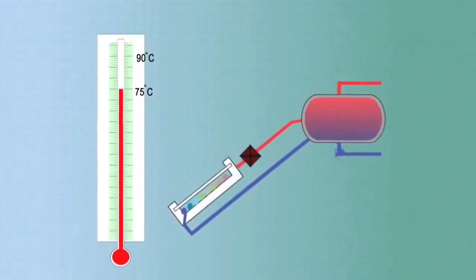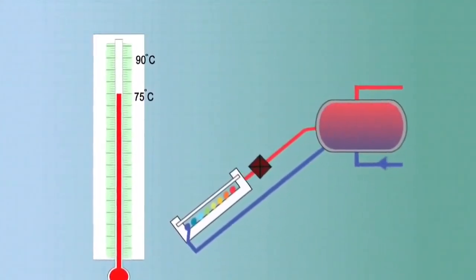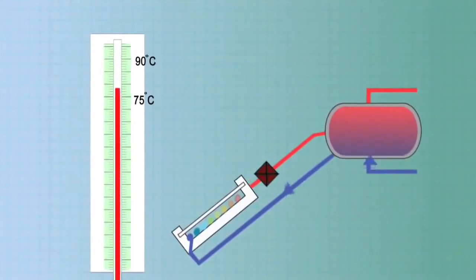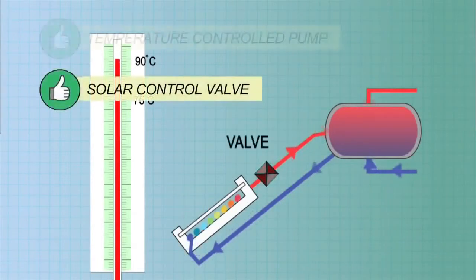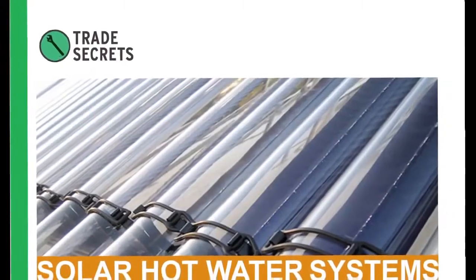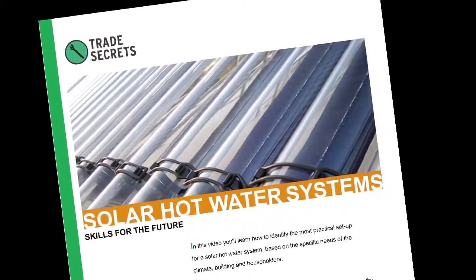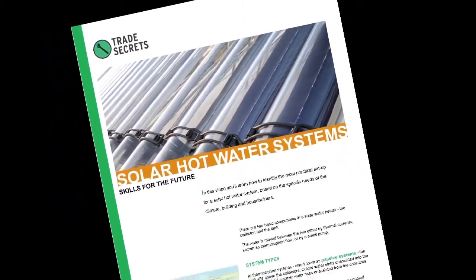The most common way to prevent overheating in the tank is by automatically stopping the circulation between collector and tank when the tank water gets too hot. This can be done using a solar control valve or a temperature-controlled pump. See the fact sheet on the Trade Secrets website for more information about how to control for frost and overheating.